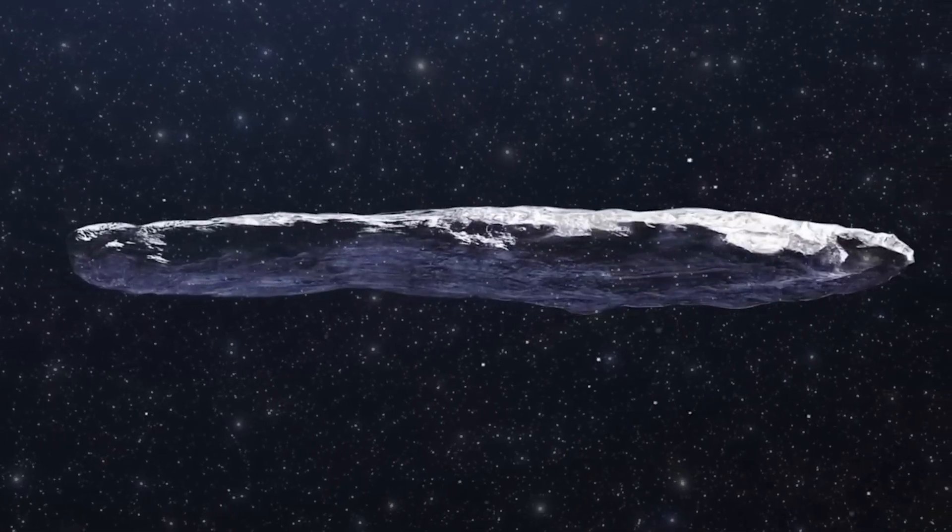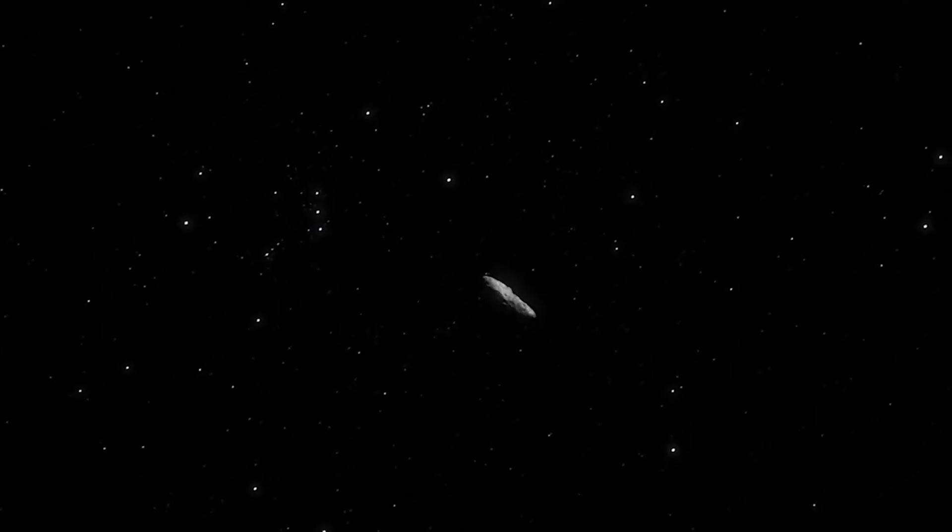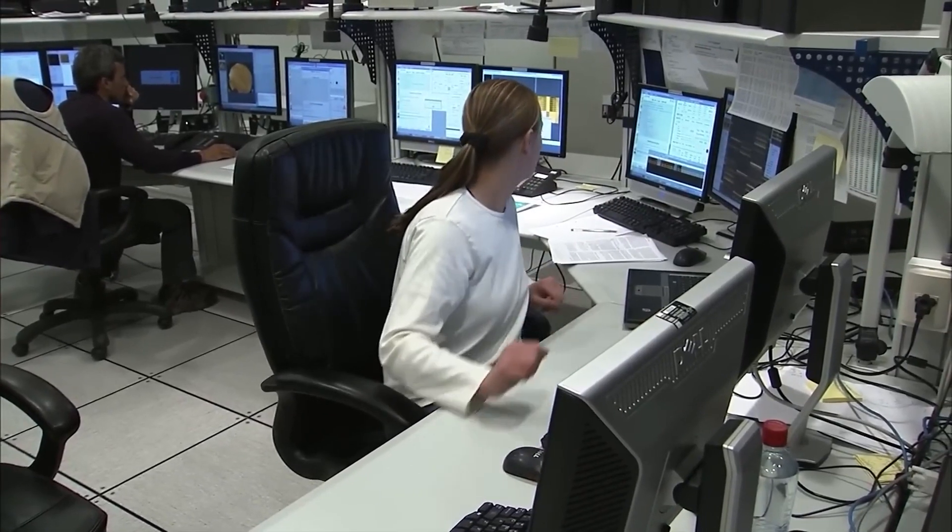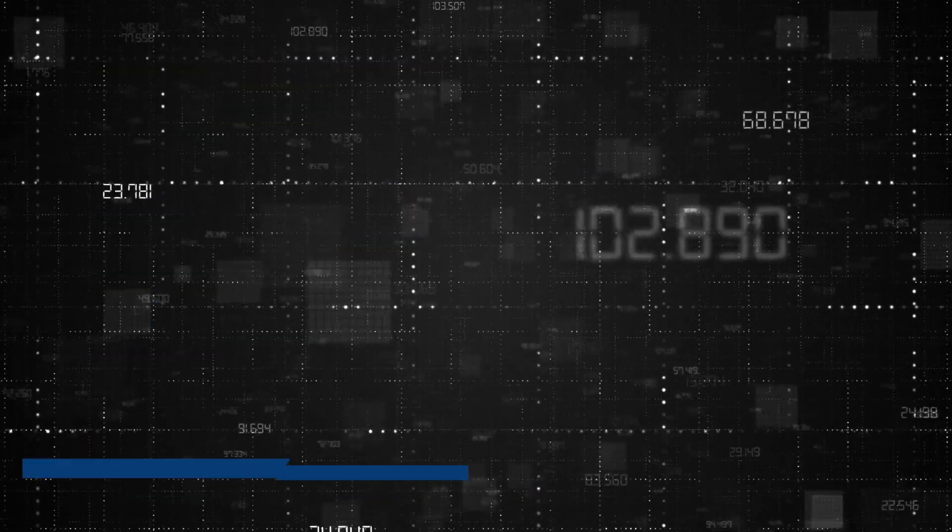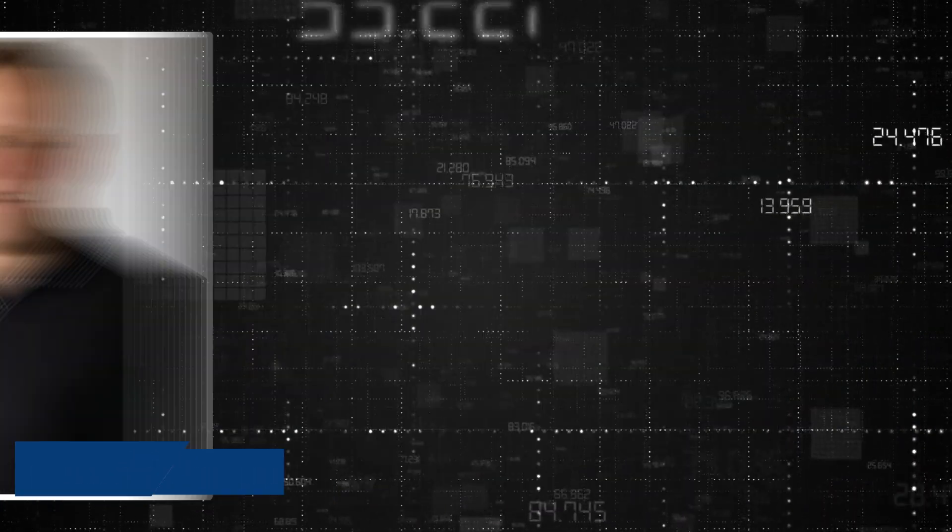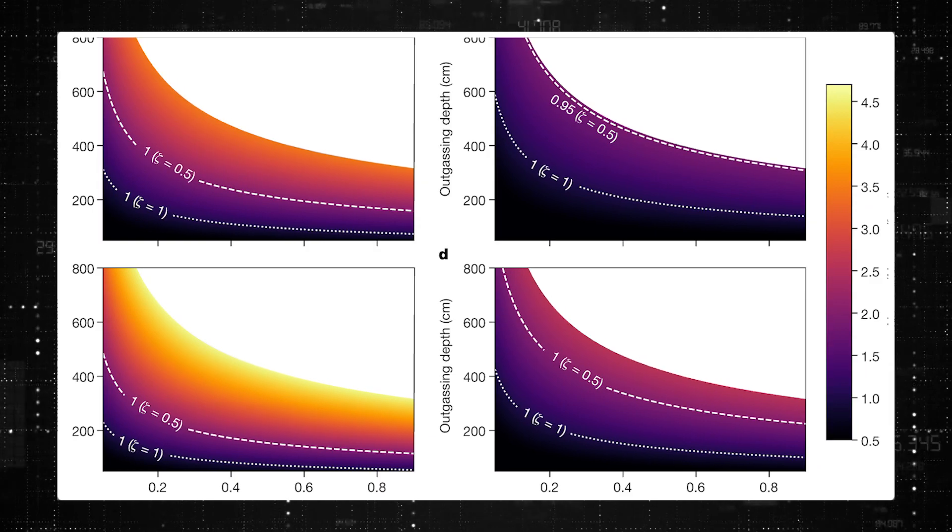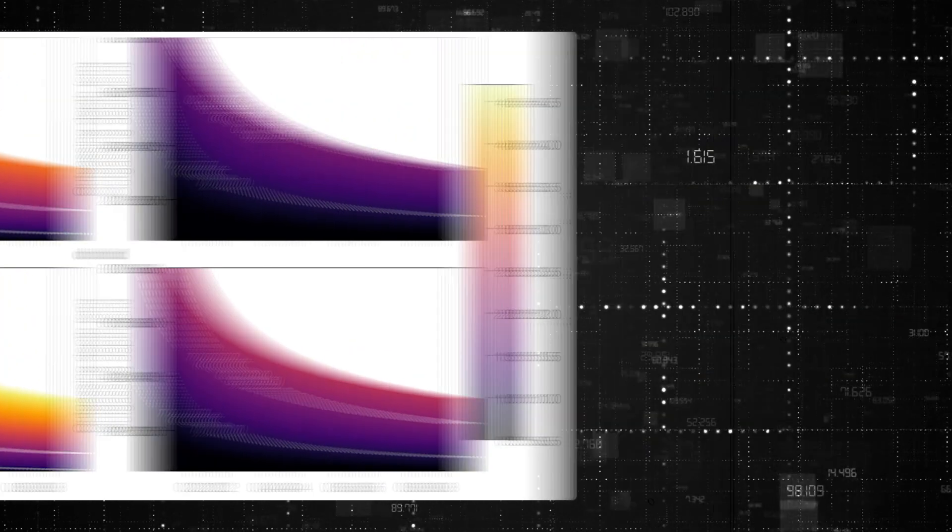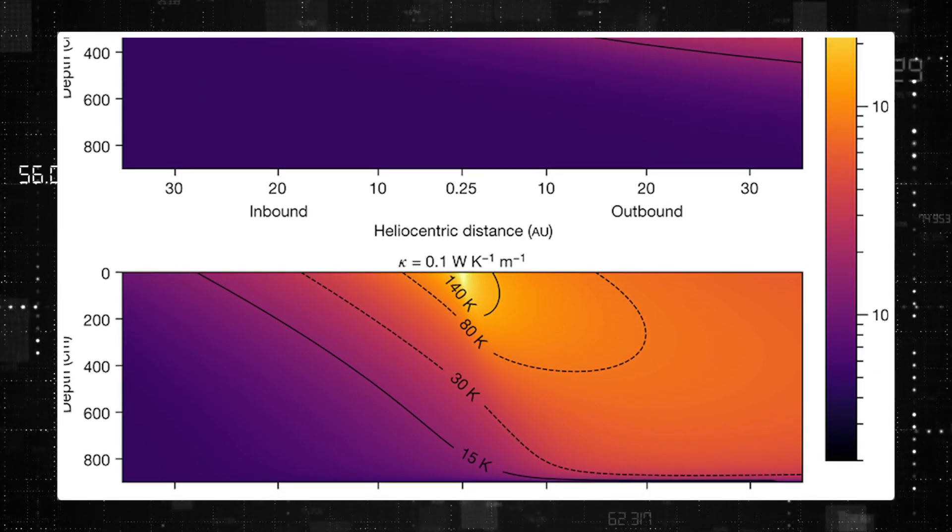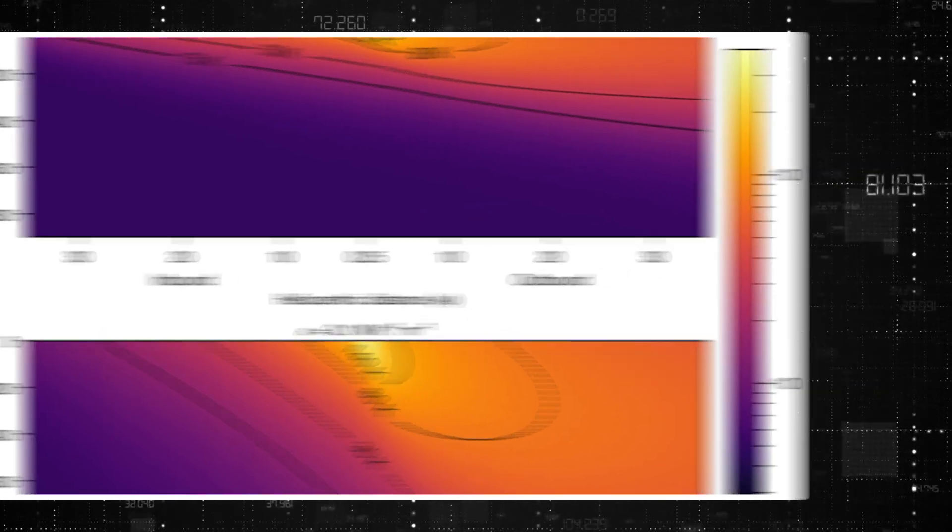The investigation of Oumuamua was led by a team of researchers, including Jennifer Bergner, a chemist at the University of California, Berkeley, and Daryl Seligman, an astronomer at Cornell University. The model they proposed in their research paper is the most convincing model ever considered about the true nature of Oumuamua.